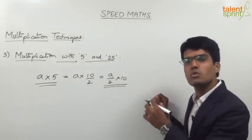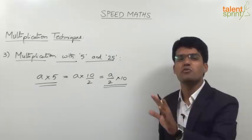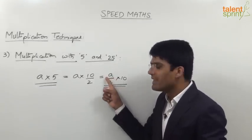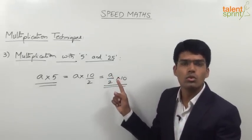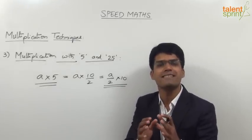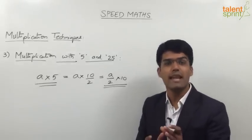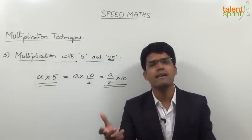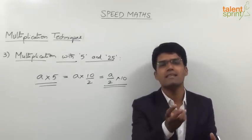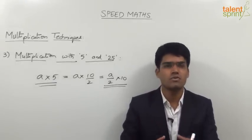Let us take some examples to understand this. For example, 4 into 5: half of 4 is 2, and 2 into 10 is 20. Similarly, 6 into 5: half of 6 is 3, so 3 into 10 is 30. 8 into 5: half of 8 is 4, taken 10 times is 40. Multiplication with 10 doesn't take any time — that's simply attaching a zero at the end. The only point is you should be able to take half of the number, and even that is not so difficult.